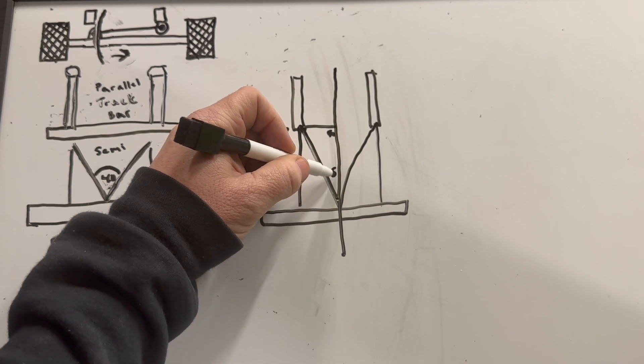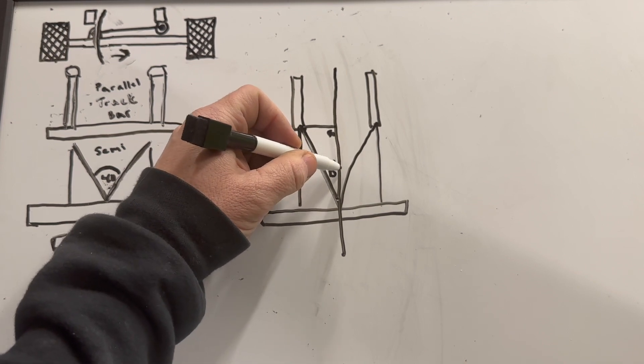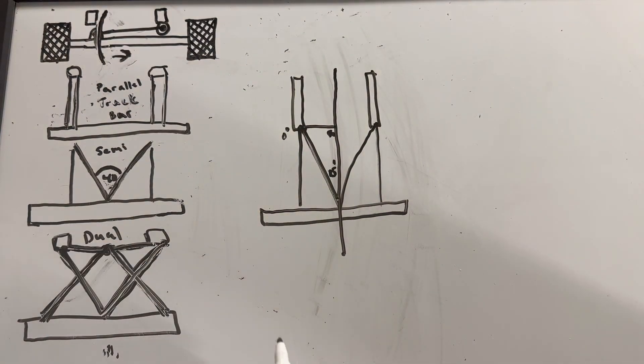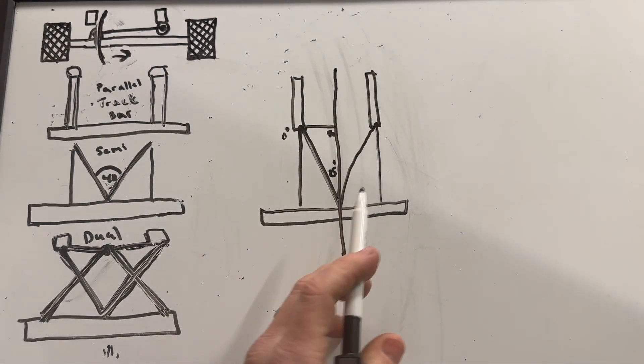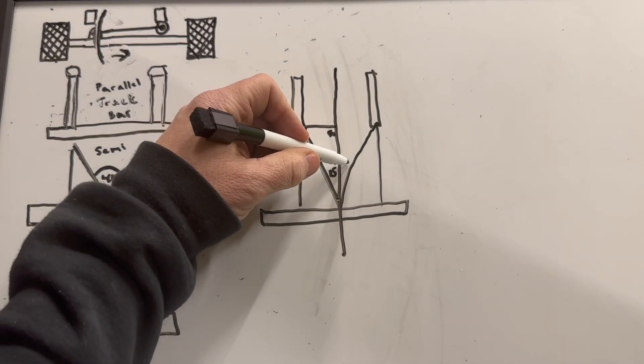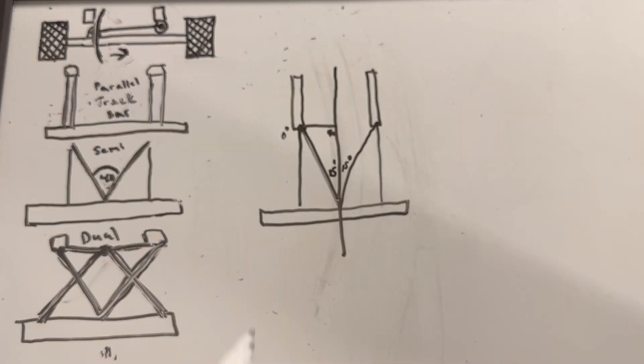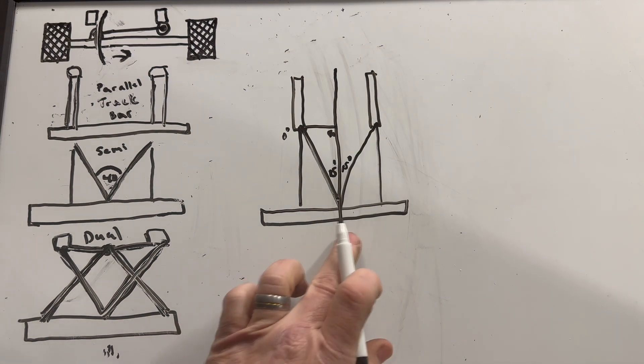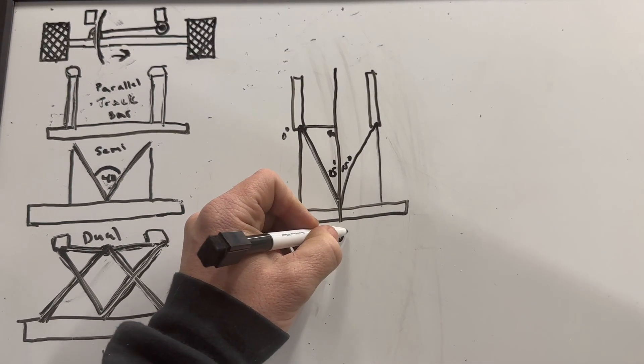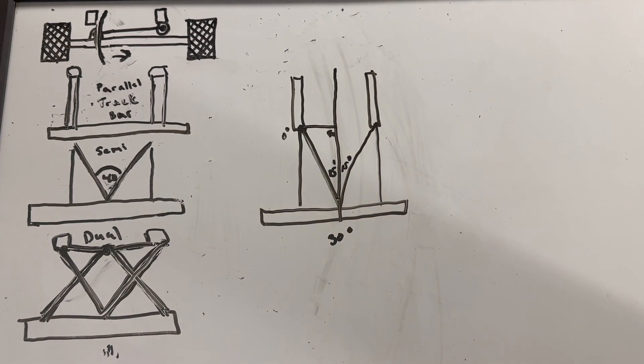So let's say this comes out 15 degrees. Now because we know that link is at 15 degrees and the axle is perfectly centered and everything's mirrored on the other side, that means this one is at 15 degrees.